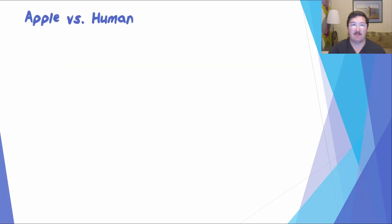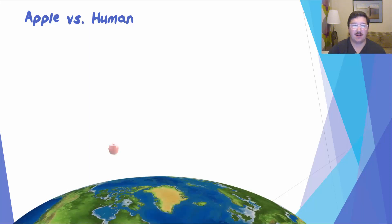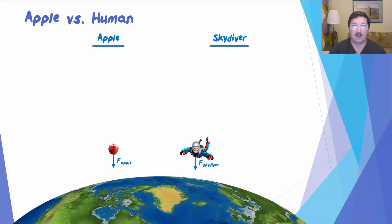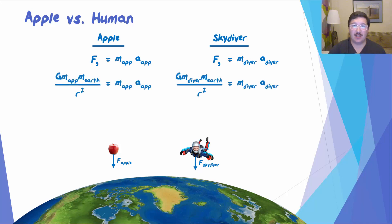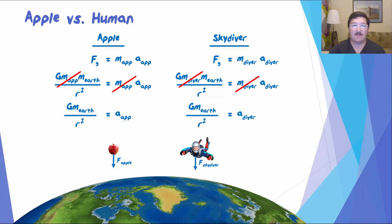Let's take a look at how two objects of different masses are both affected by the Earth's gravitational field. Here's the Earth, the apple, and a skydiver — both feel a force down toward the Earth. For any object, the force they feel equals mass times acceleration. In this case that force is gravity: G times the object's mass times the mass of the Earth divided by the distance squared. There's a mass in common on each side of the equation, so we can cancel it out. This leaves the acceleration equal to big G times the mass of the Earth divided by the distance squared — the same for both objects regardless of their mass.